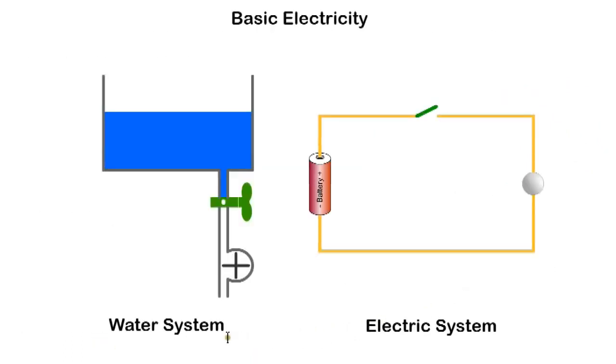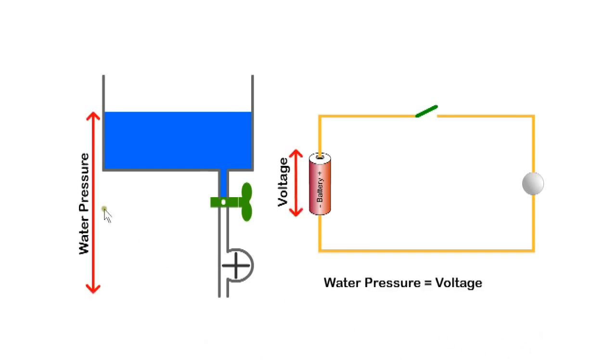We'll use an analogy with a water circuit to explain the operation of an electric circuit. The water pressure due to the height of the tank is similar to the potential difference or voltage provided by the battery. The valve is similar to the switch and the wheel is similar to the lamp, while the flow of water can be compared to the flow of current.